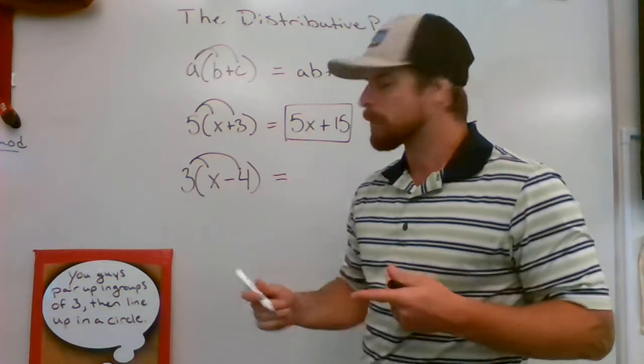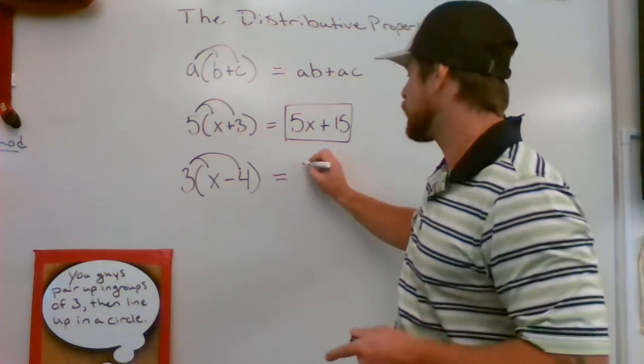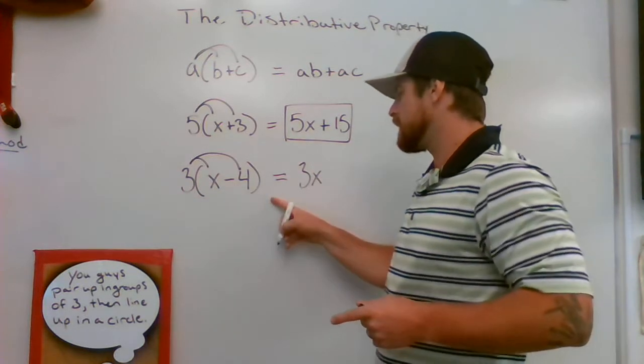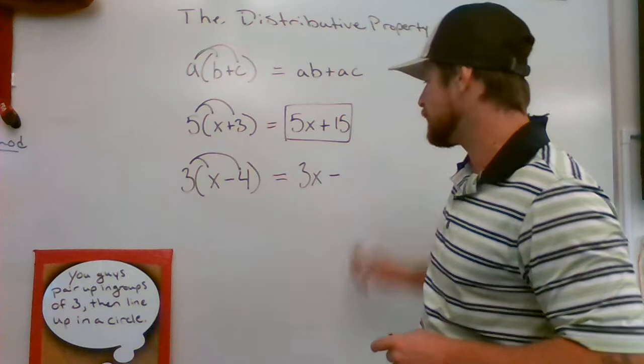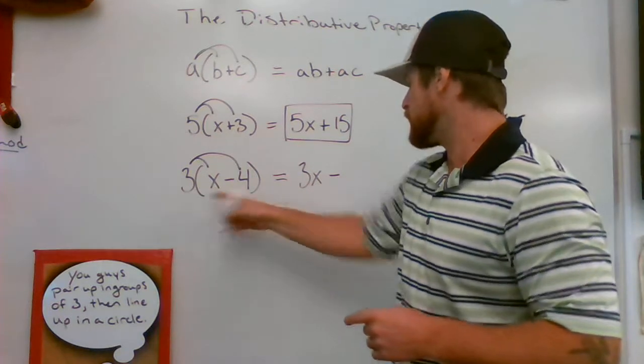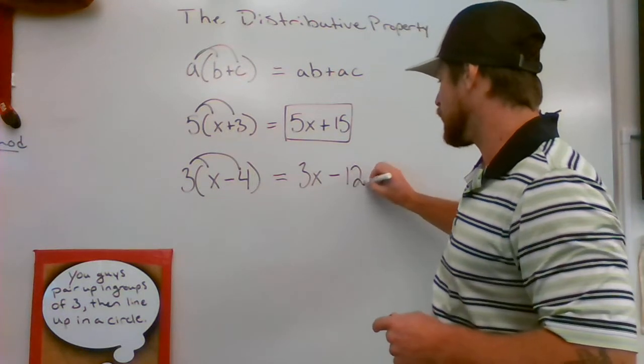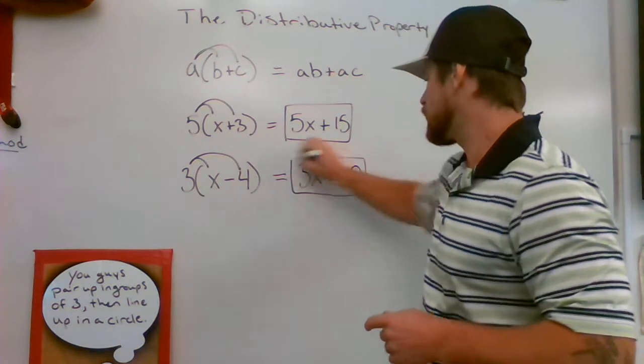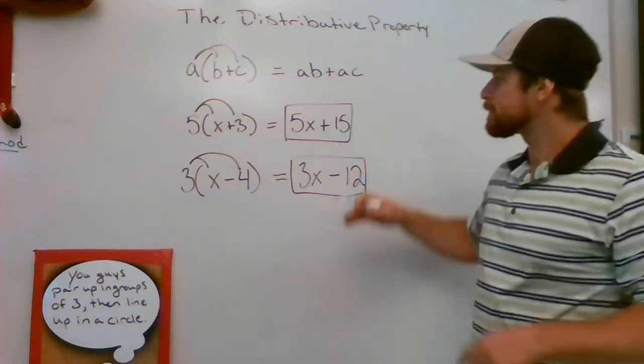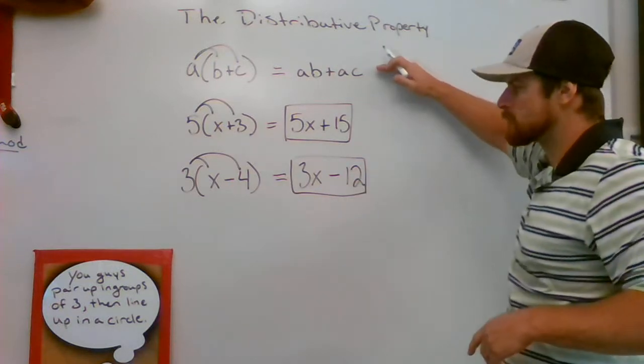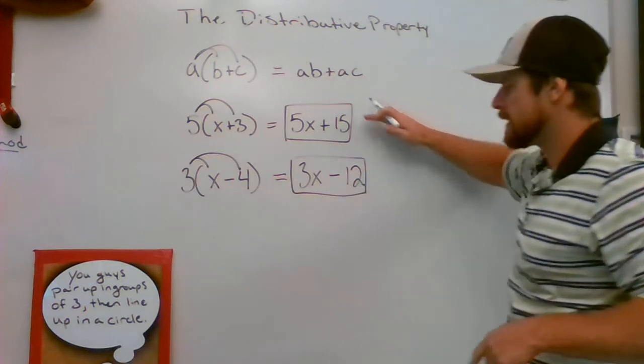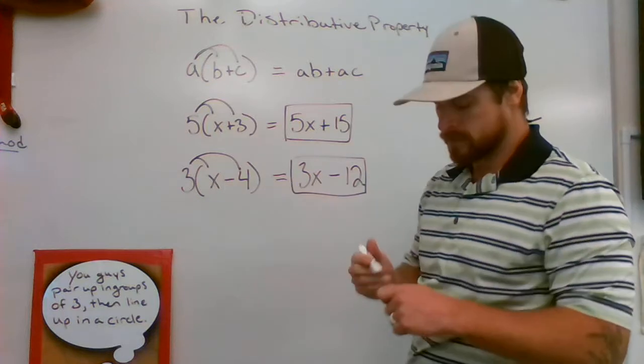So the first step, three times X is gonna give me three X. And three times negative four is gonna give me a negative. And four times three or three times four is gonna give me 12. So I'm going from nothing but variables to all positive values. Now we have a negative stuck in there.